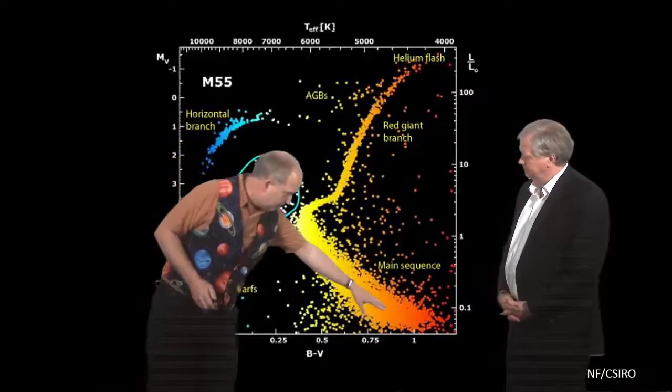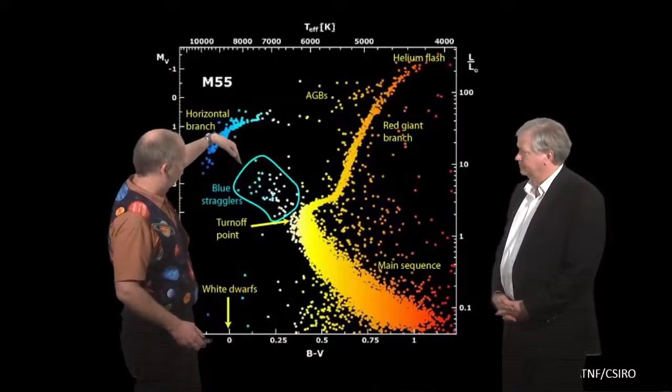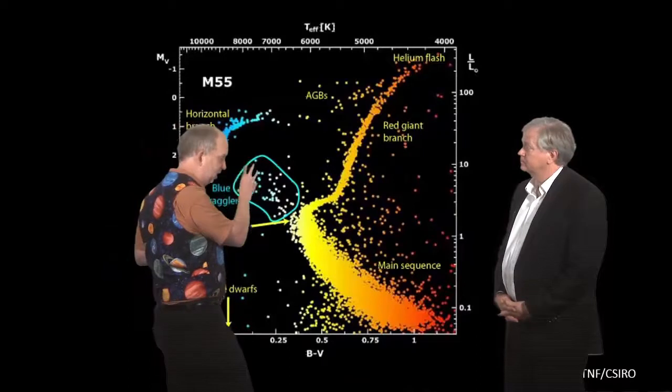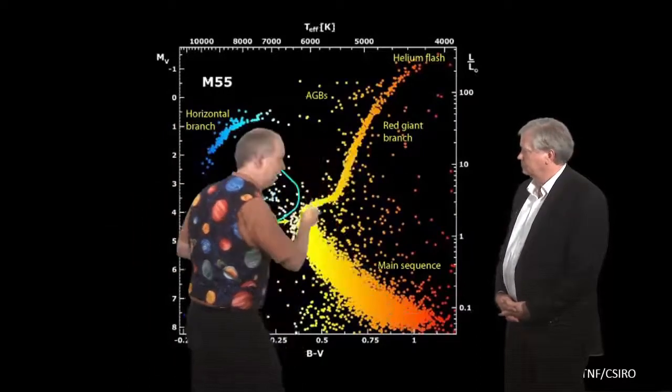Now, we've seen this before. We normally have the main sequence of stars, which originally would have gone all the way up here. So these would be the very massive stars burning very fast, all the way down to the pathetic little red dwarf, our Sun somewhere in the middle.